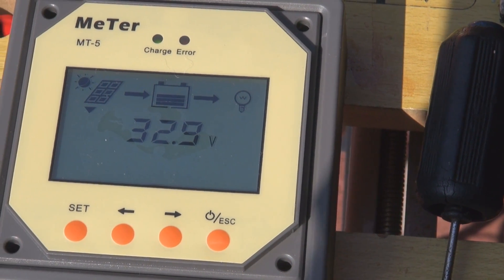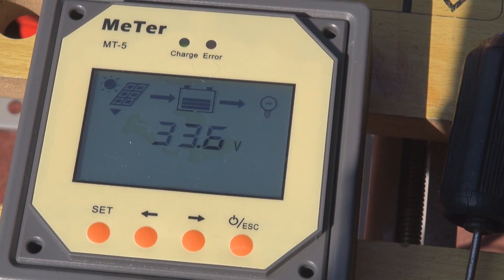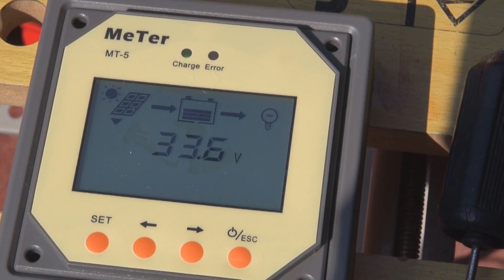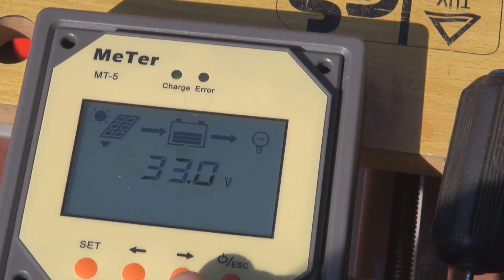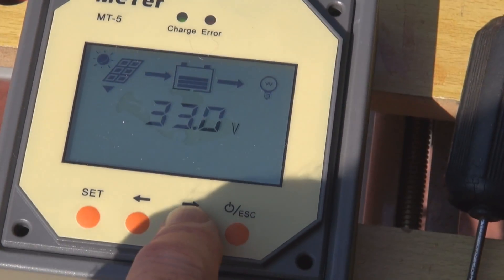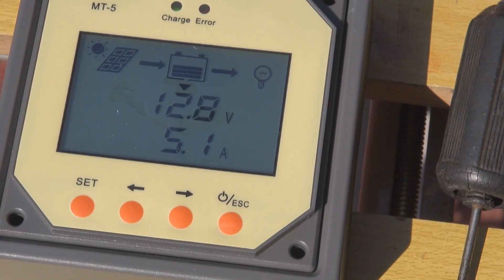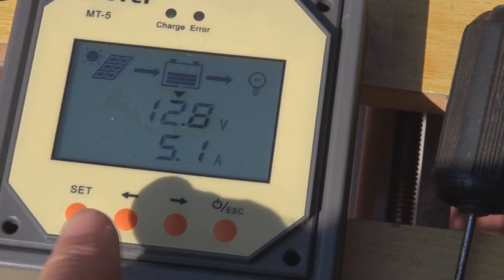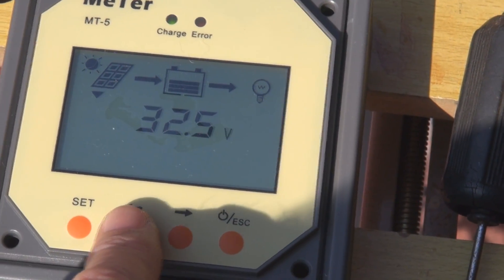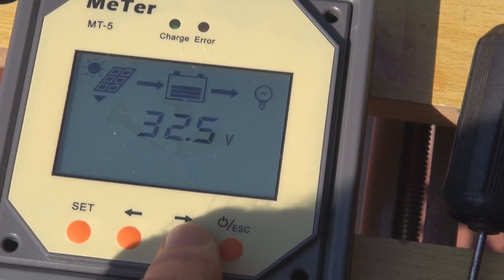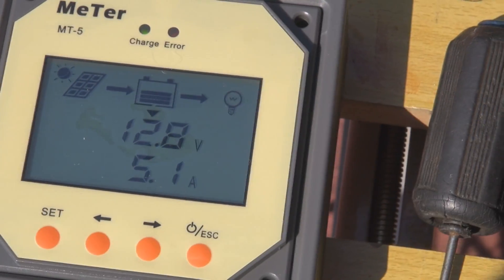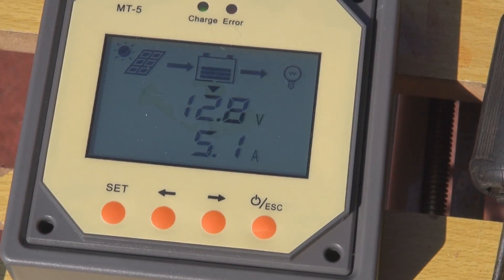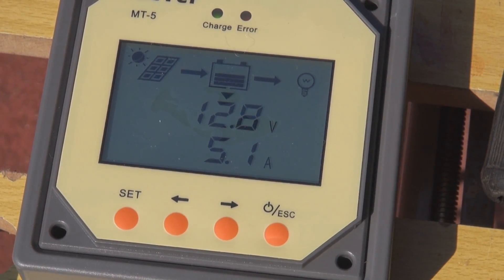You can see it moving slightly as it tries different settings to find the maximum power. On the car battery side, it's now up to 12.8 volts and charging at 5.1 amps. So we have the panels running at around 32 volts and the car battery charging at 5.1 amps at 12.8 volts.